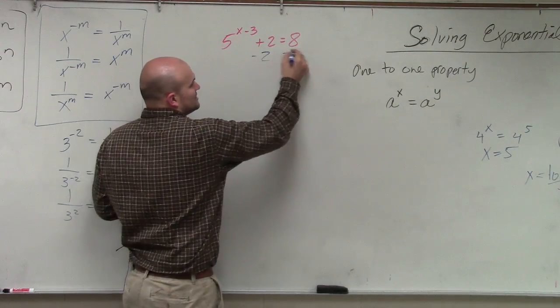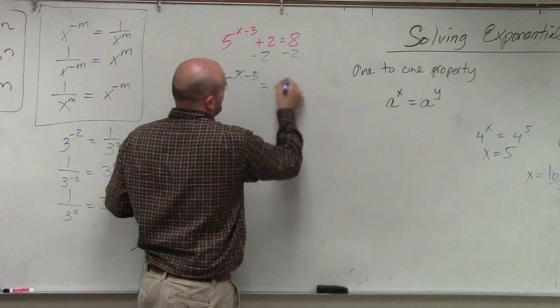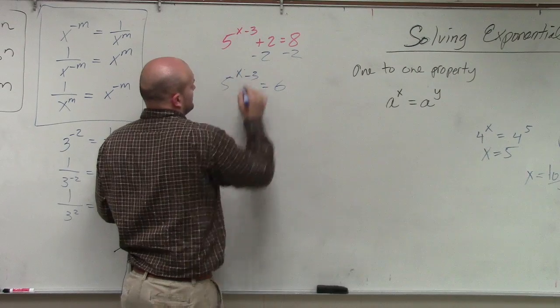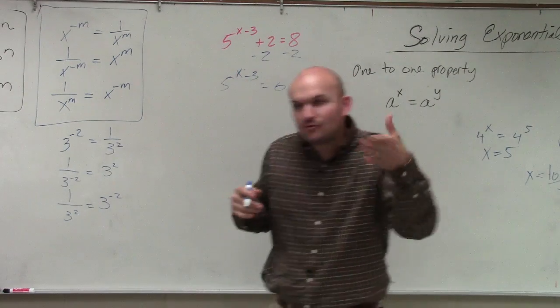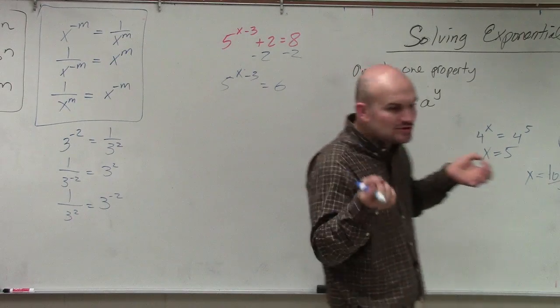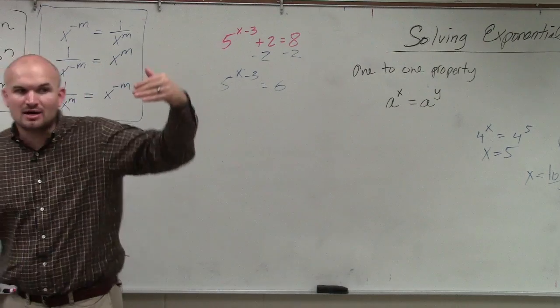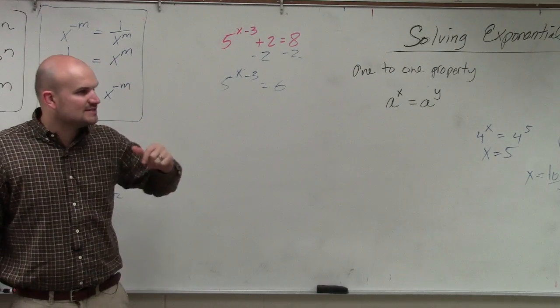So the first thing we need to do is subtract 2 on both sides. Now we have 5 raised to the x minus 3 is equal to 6. And ladies and gentlemen, we can't use the one-to-one property because we can't think of a number that's raised to a power that's going to be the same for 5 and for 6.